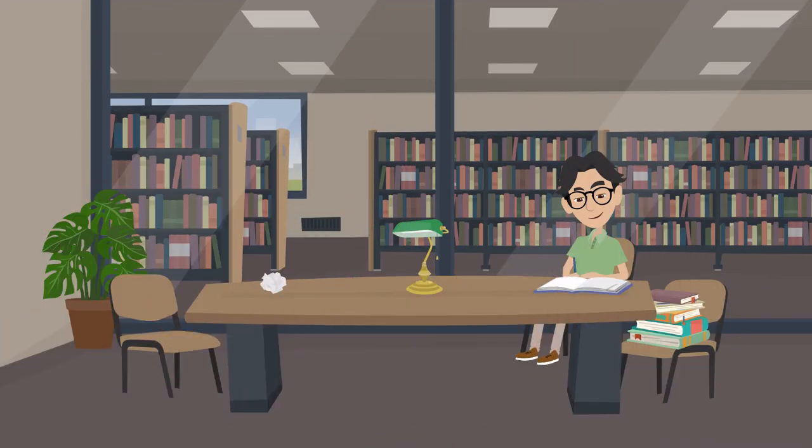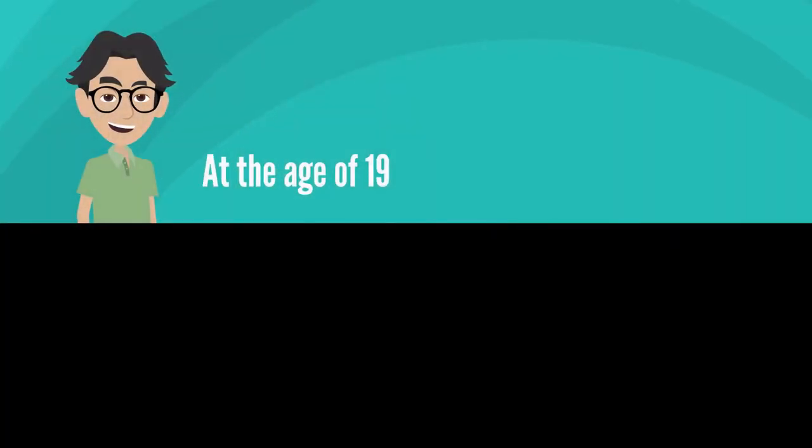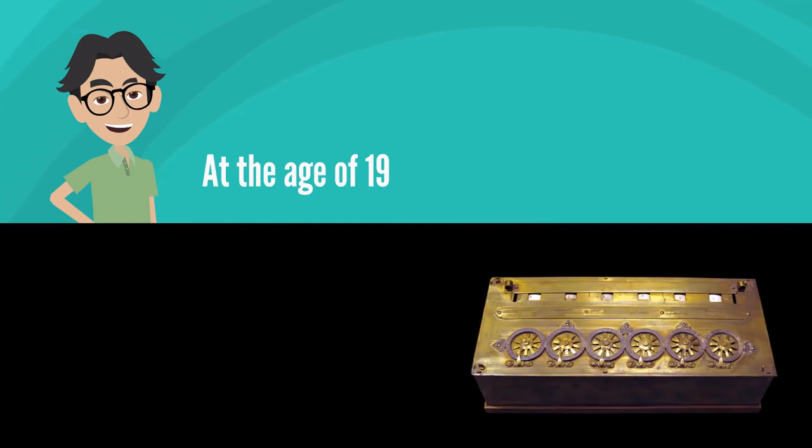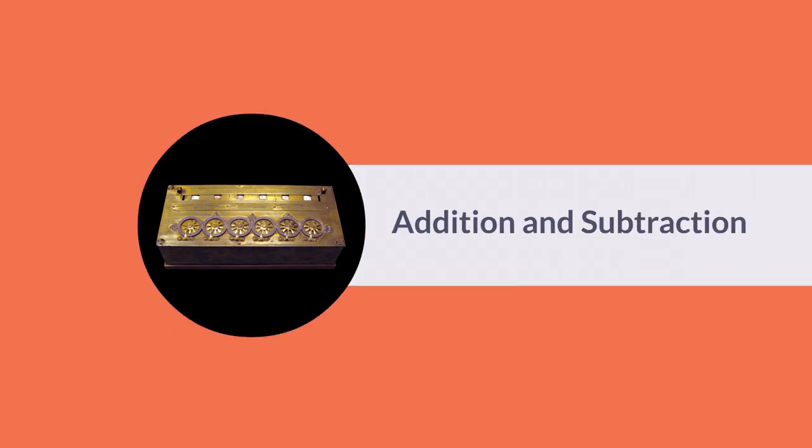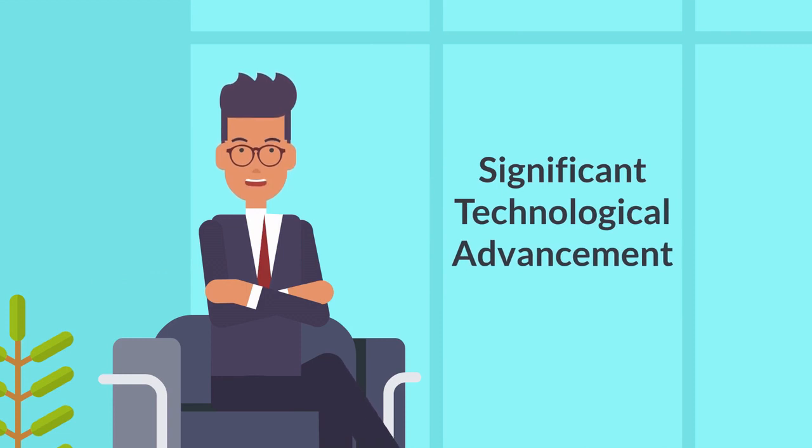By the time he was a teenager, he had already made several important discoveries in the field of geometry. At the age of 19, Pascal invented the first mechanical calculator known as the Pascaline. This device was able to perform addition and subtraction, and it was considered a significant technological advancement at the time.